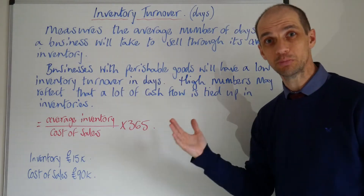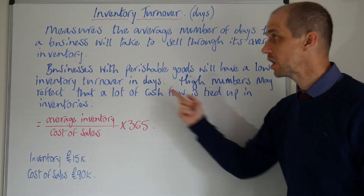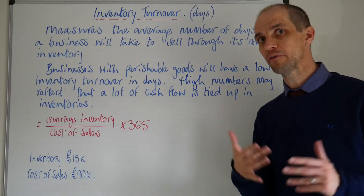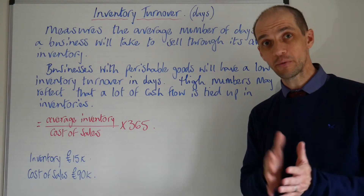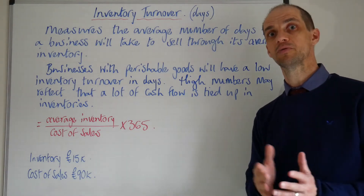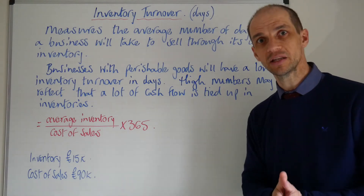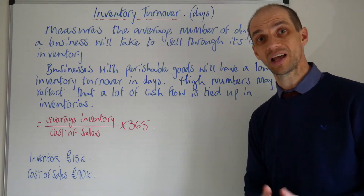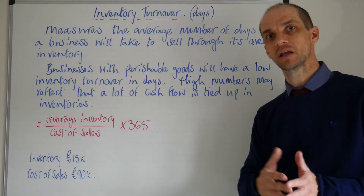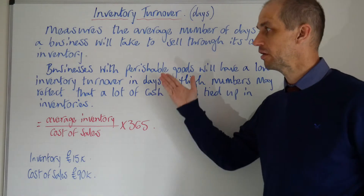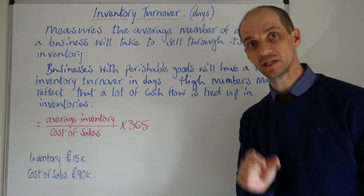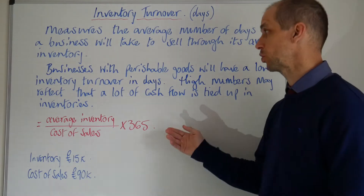Businesses with perishable goods will have a low inventory turnover. If you consider a fruit and veg store, it's going to have a very, very low inventory turnover in terms of the actual number of days, since there's only so many days that fruit and veg will actually keep. Just like a smoothie bar will have a low inventory turnover in terms of the number of days it takes to sell through that average stock level.